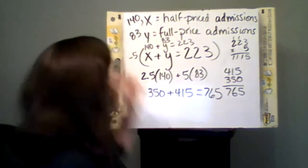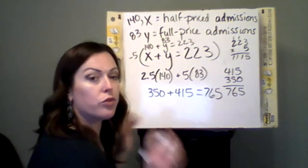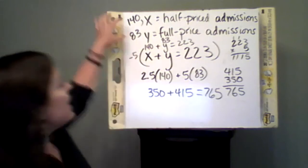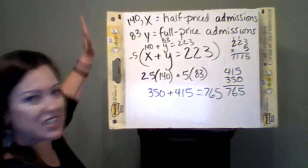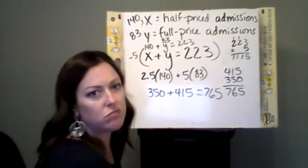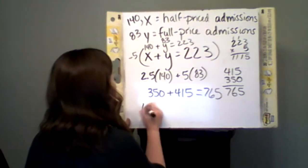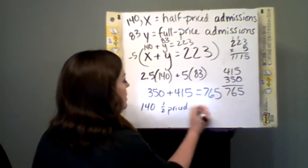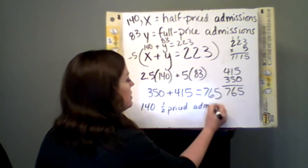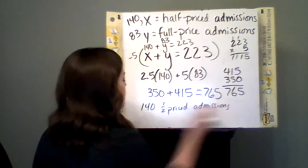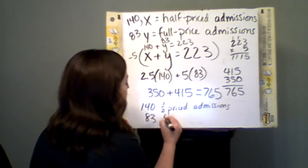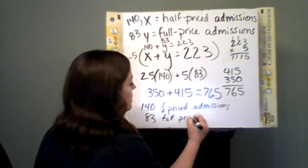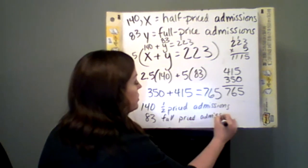So I found the solution. The last statement is we state what our solution is. This kind of works, but this isn't as nice. So it'd be good if it was a little nicer: 140 half-priced admissions, and then 83 full-priced admissions.